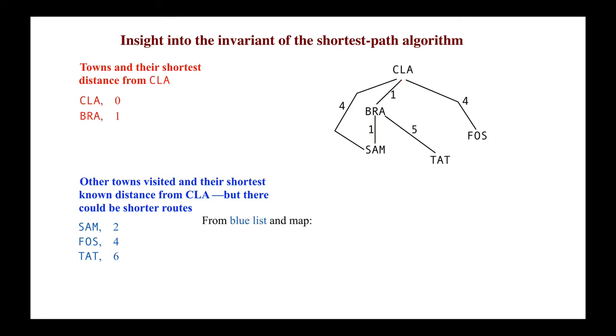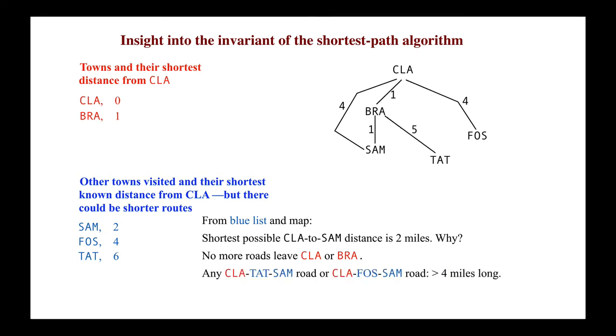Again, from the blue list and the map, we knew that the shortest distance from Clay to Sam was two miles. There could not be a shorter road. There were no more roads leaving Clay and Bray, and any path from Clay through Tate or Foss would be longer than four miles.